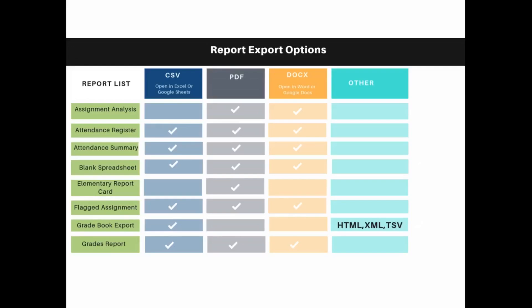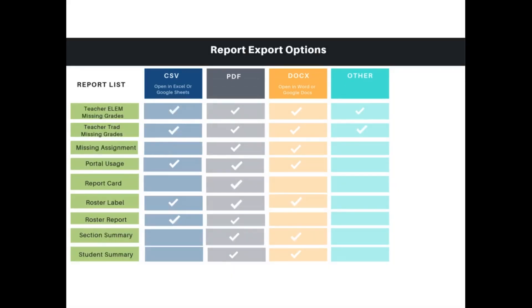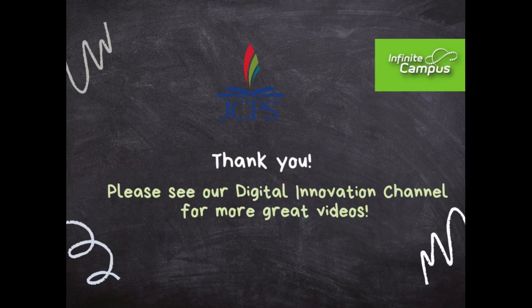The next few pages outline the report export options for various reports. This is an overview of the report export options for the assignment analysis, attendance register, attendance summary, blank spreadsheet, elementary report card, flagged assignment, gradebook export, and the grades report. As you can see, the most common export options are CSV, PDF, and DocX. These are also the export options for the two teacher missing grades reports, missing assignment reports, portal usage, report card, roster label, roster report, and the section and student summary. Thank you. This concludes the video on running teacher reports in Infinite Campus. Please see our digital innovation channel for more great videos.